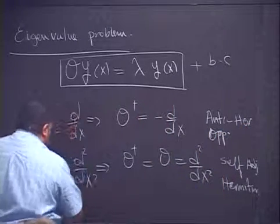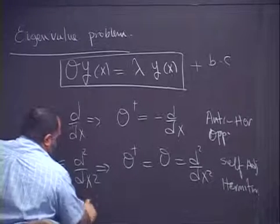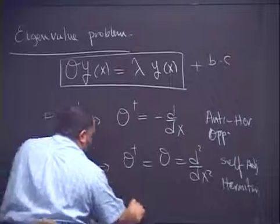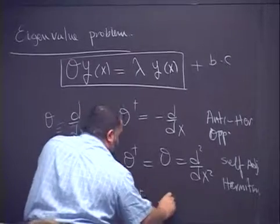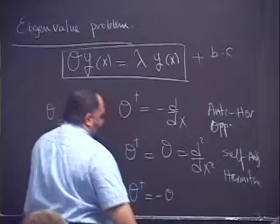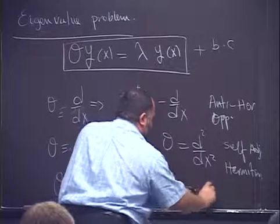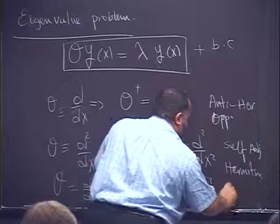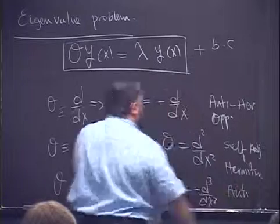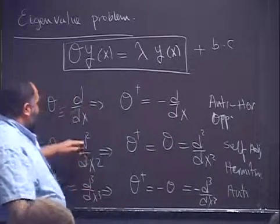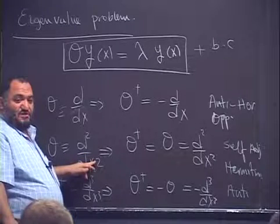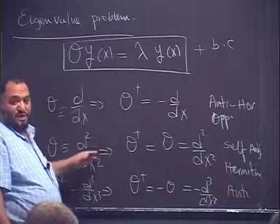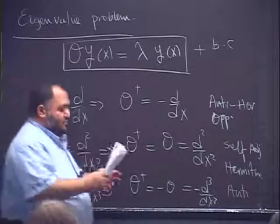Continuing this pattern, for d³/dx³ the adjoint operator is negative d³/dx³, which is again anti-Hermitian. So we notice that even-order derivatives give Hermitian operators, and odd-order derivatives give anti-Hermitian operators.